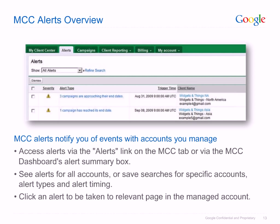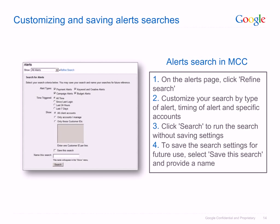In order to take action on an alert, just click on it and you'll be taken to the most relevant page in the managed account. In order to run and save searches for MCC alerts: first, on the Alerts page, click the link to refine search to reveal available search options. Then customise your search by type of alert — for payment alerts, campaign alerts, keyword and creative alerts, and budget alerts — by timing of alert from the Time Triggered menu, and by accounts you want to search: all accounts, only accounts you directly manage, or individual accounts.